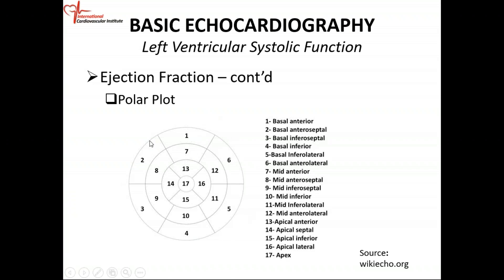For the different segments, you can just give the wall motion a score. If the segment is normal, you score it 1; if it's hypokinetic, you score it 2; if it's akinetic, you score it 3. So you can score each segment, and once you look at it, you can see which segment is abnormal. Then you can infer from that which blood vessel is blocked.